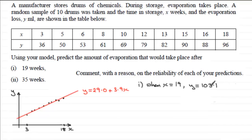Now we're asked to comment with a reason on the reliability of each of our predictions. And as you can see the scatter diagram is only drawn for values of x between 3 and 18.